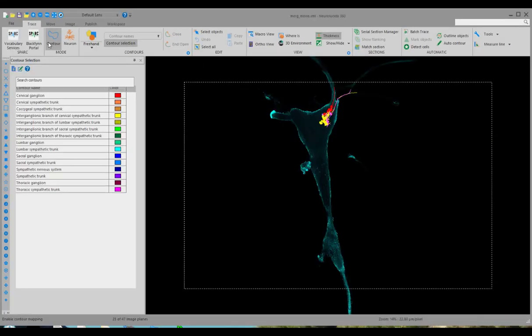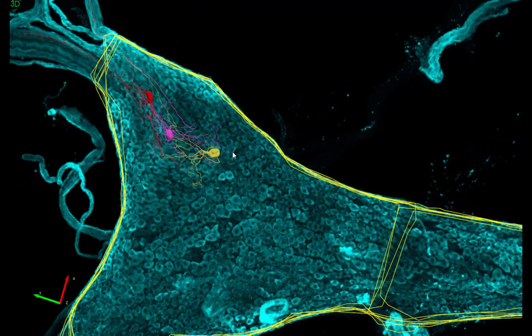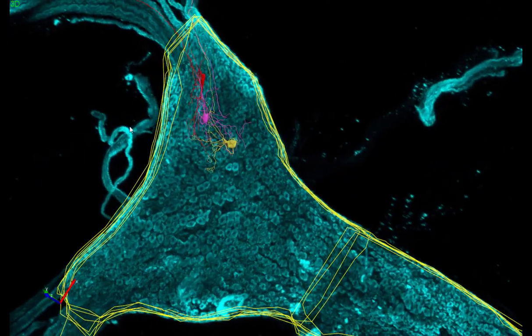Using the FAIR vocabularies in Neurolucida 360, the stellate structure from the low-resolution image was contoured on a series of 2D planes for a set interval. Its surface can be created on these contours in the 3D window to represent the volume of the whole ganglia in the data file.